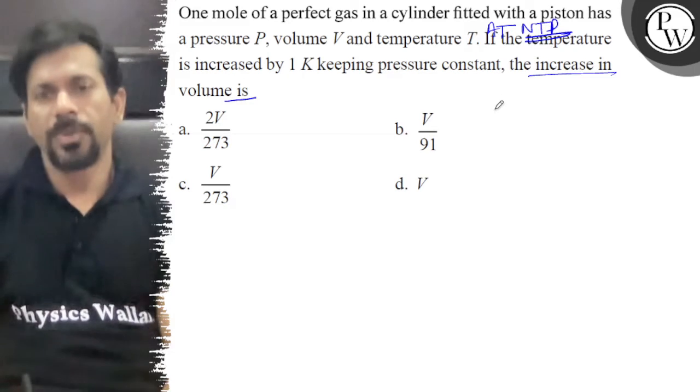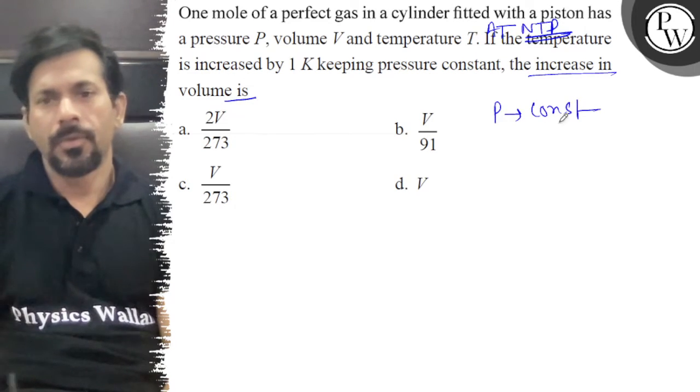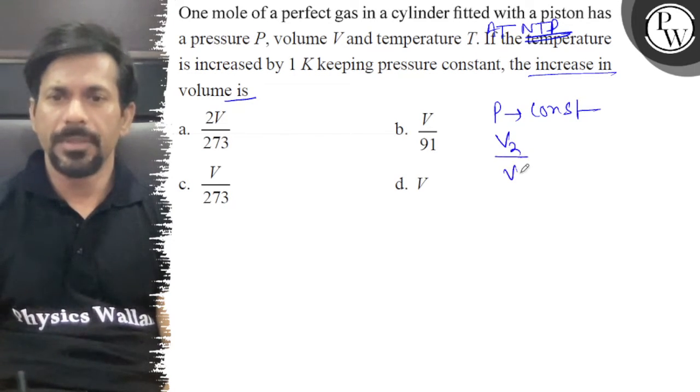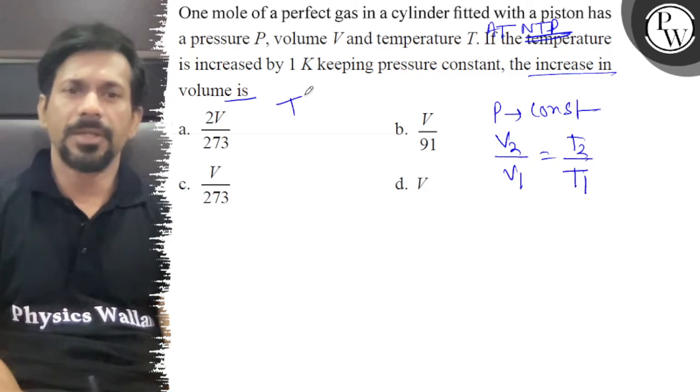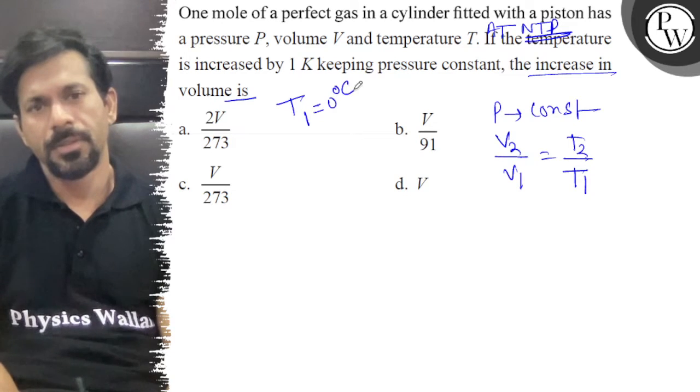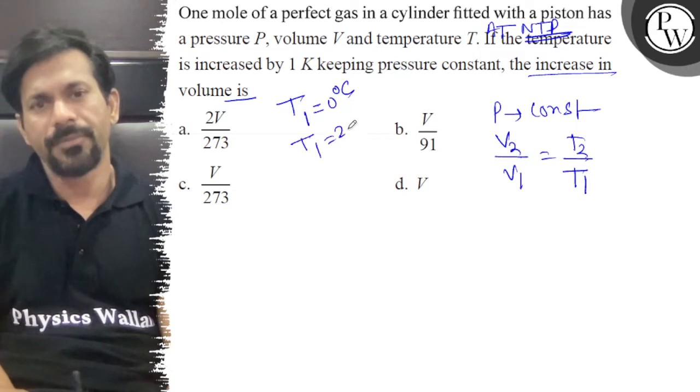So, for constant pressure: V2 upon V1 equals T2 upon T1. T1 is equal to 0 degrees Celsius, normal temperature, which is 273 Kelvin.